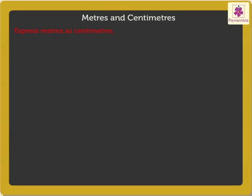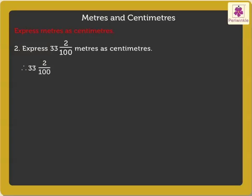Now let's solve one more example. Express 33 and 2 upon 100 meters as centimeters. Here, 33 and 2 upon 100 meters is equal to 33 into 100 plus 2, which is equal to 3300 plus 2, which is equal to 3302 centimeters.